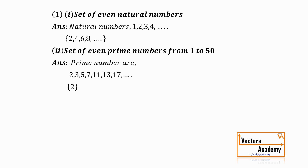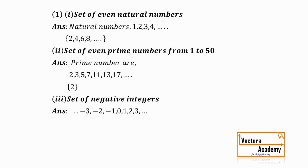Let's look at the third statement: a set of negative integers. Integers are numbers represented on the number line — 1, 2, 3, 4, and it contains 0 as well as negative values: −1, −2, −3 and so on. Out of these, which are the negative integers? The terms on the left-hand side: −1, −2, −3 and so on. So all these numbers will come inside our set.